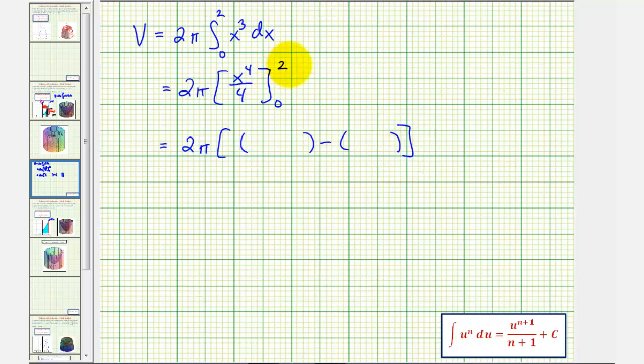So when x is two, we'd have two to the fourth, which is 16. 16 divided by four would be four. And then when x is zero, this would be zero.